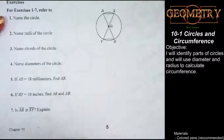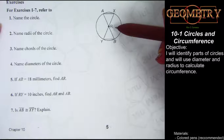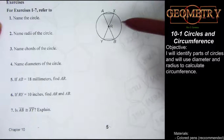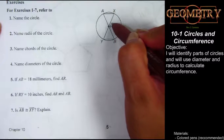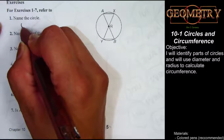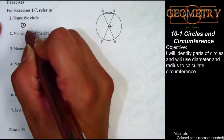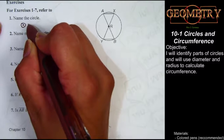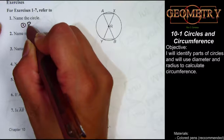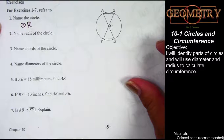Number 1 asks us to name the circle. In order to name the circle we need to identify the point in the middle. This point here in the middle is R, and so this circle's name is R. We write the name by writing the symbol for a circle — a circle with a dot in the middle — and then the letter R for the dot at the center.